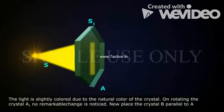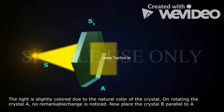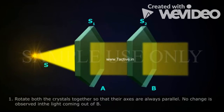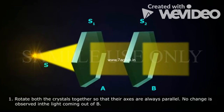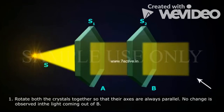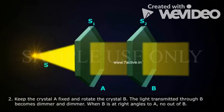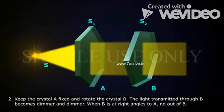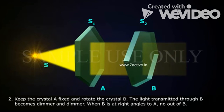The light is slightly coloured due to the natural colour of the crystal. On rotating the crystal A, no remarkable change is noticed. Now place the crystal B parallel to A. First, rotate both the crystals together so that their axes are always parallel — no change is observed in the light coming out of B. Second, keep the crystal A fixed and rotate the crystal B. The light transmitted through B becomes dimmer and dimmer, and when B is at right angles to A, no light comes out of B.